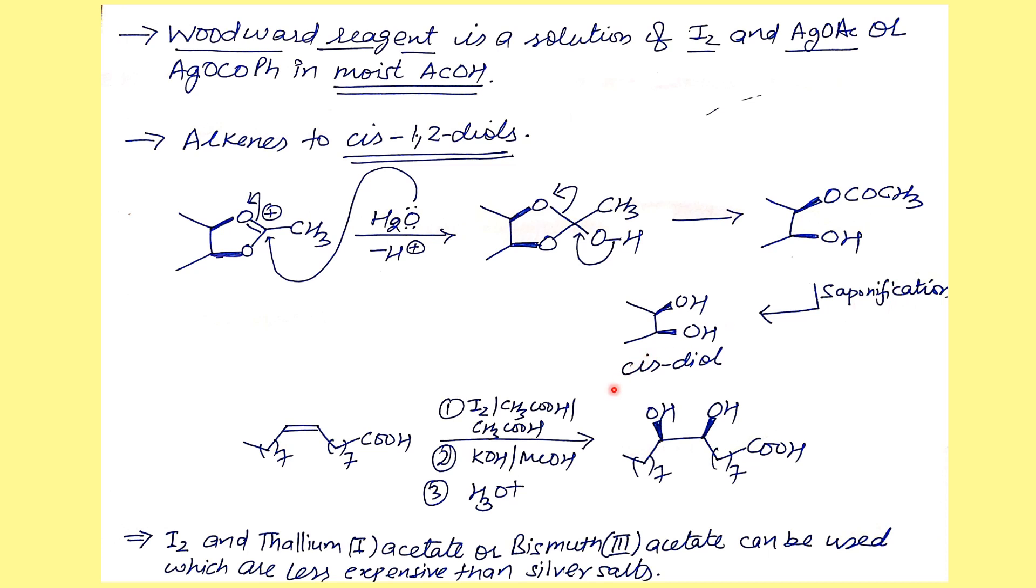Here is a representative example. I have missed something here—instead of acetic acid, it should be silver acetate. Just consider Ag, and since we have the acetic acid as the media which is moist, the product we are getting is the cis-diol. This is a mistake, so this should be silver acetate.